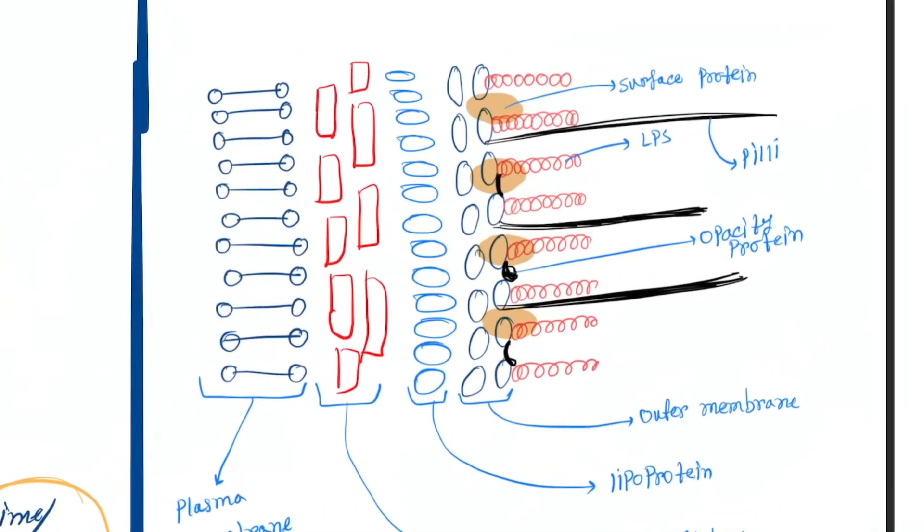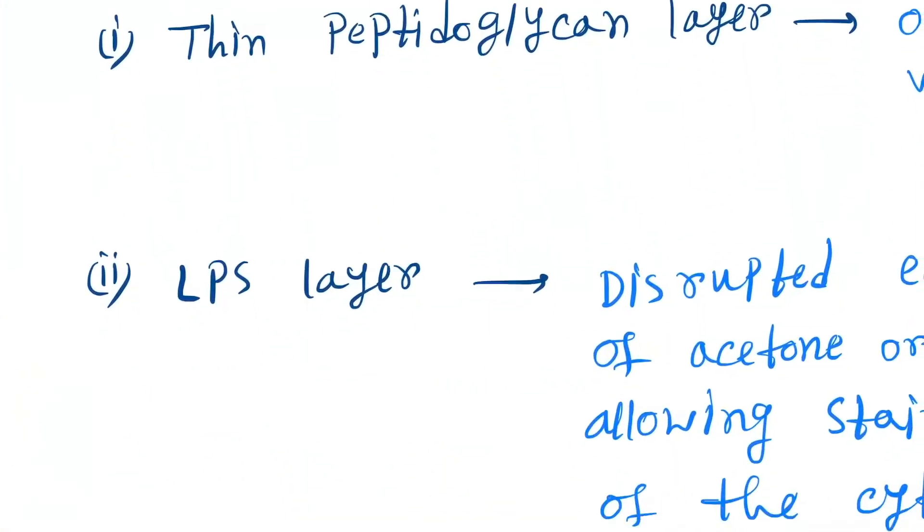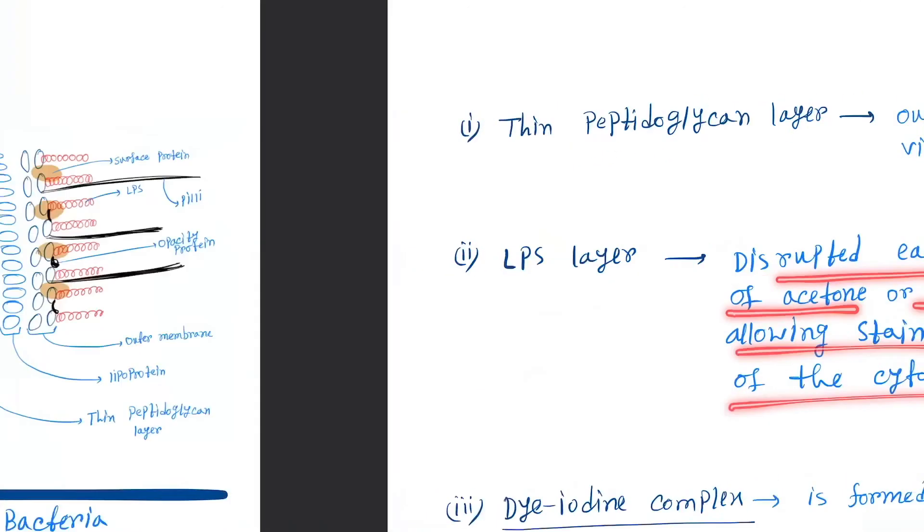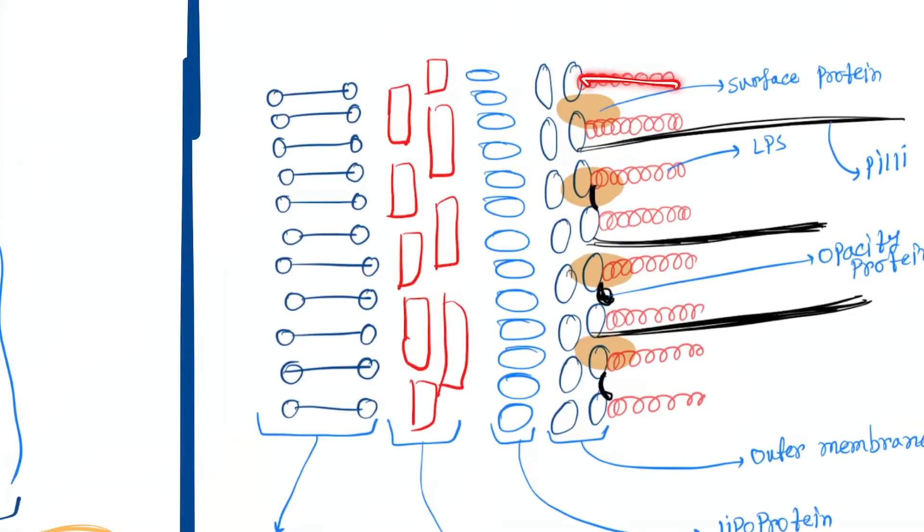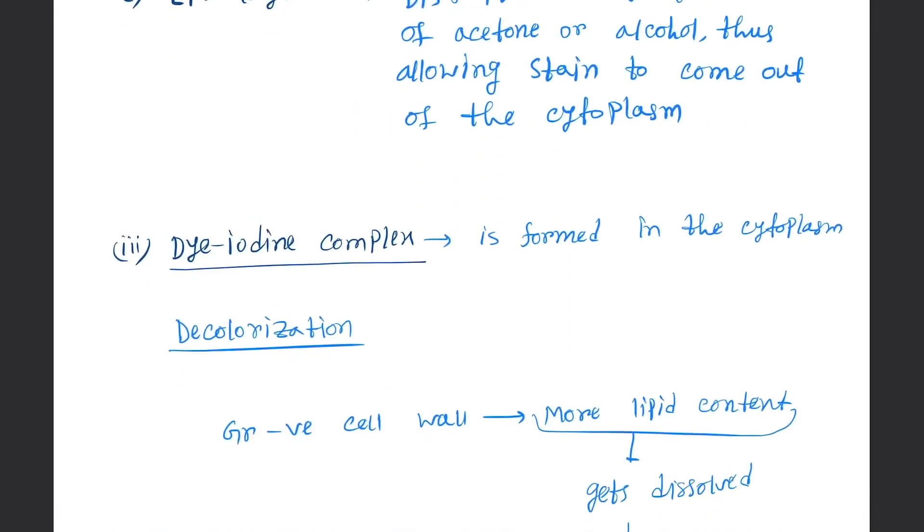Second is the LPS layer - lipopolysaccharide layer. Here you can see LPS is present. The LPS layer is disrupted easily by the action of acetone or alcohol, thus allowing stain to come out of the cytoplasm. So acetone or alcohol disrupts the LPS and the violet will come out.